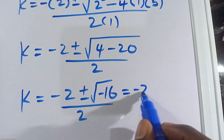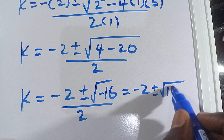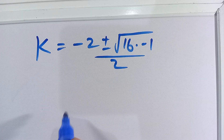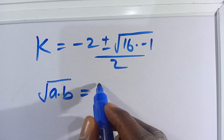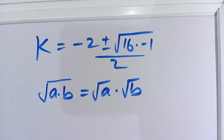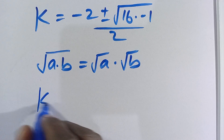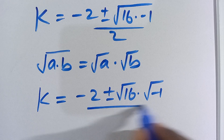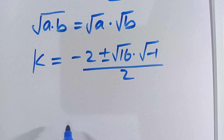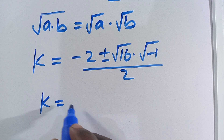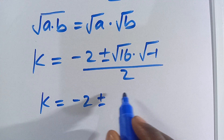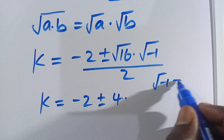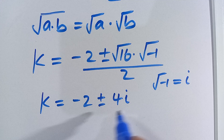We can write negative 16 as 16 times negative 1, divided by 2. Using the law of surds, the square root of a times b equals the square root of a multiplied by the square root of b. So we have negative 2 plus or minus the square root of 16 times the square root of negative 1, divided by 2. The square root of 16 is 4 and the square root of negative 1 is i, giving us 4i.